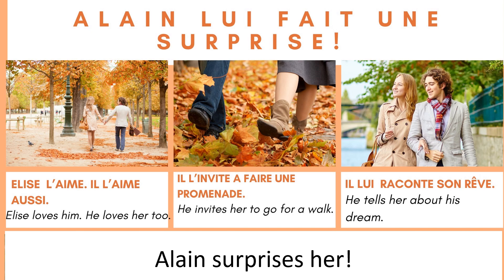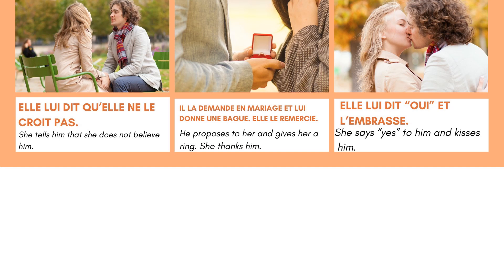Here's a little story showing how direct and indirect object pronouns are used. Alain lui fait une surprise — Alain surprises her. Élise l'aime. Il l'aime aussi — Élise loves him. He loves her too. Il l'invite à faire une promenade — He invites her to go for a walk. Il lui raconte son rêve — He tells her about his dream. Elle lui dit qu'elle ne le croit pas — She tells him that she doesn't believe him. Il la demande en mariage et lui donne une bague. Elle le remercie — He proposes to her and gives her a ring. She thanks him. Elle lui dit oui et l'embrasse — She says yes to him and kisses him.